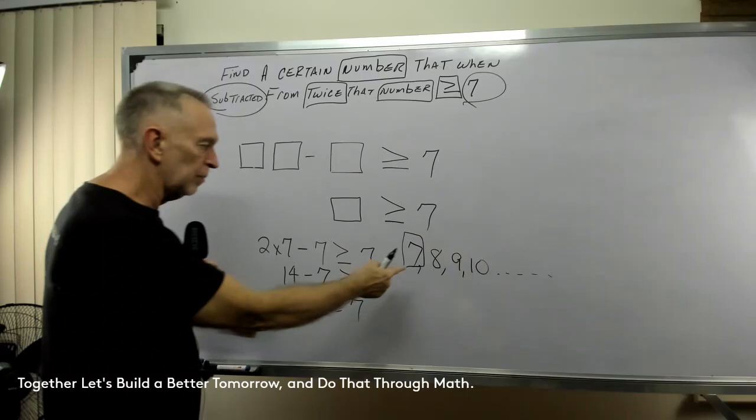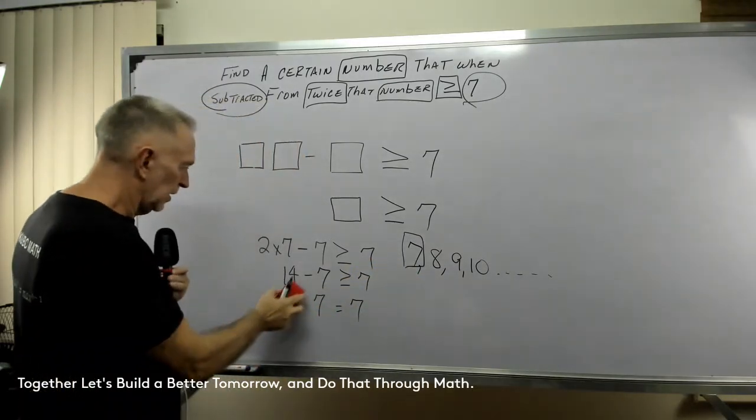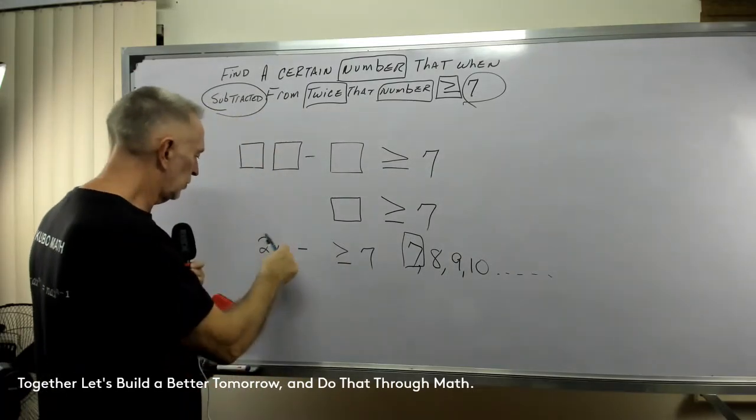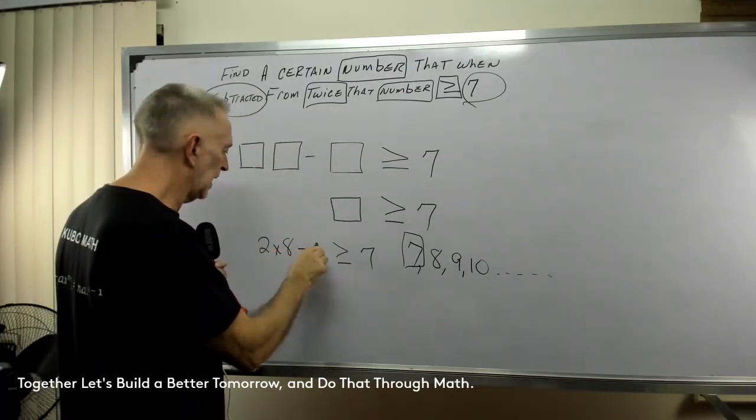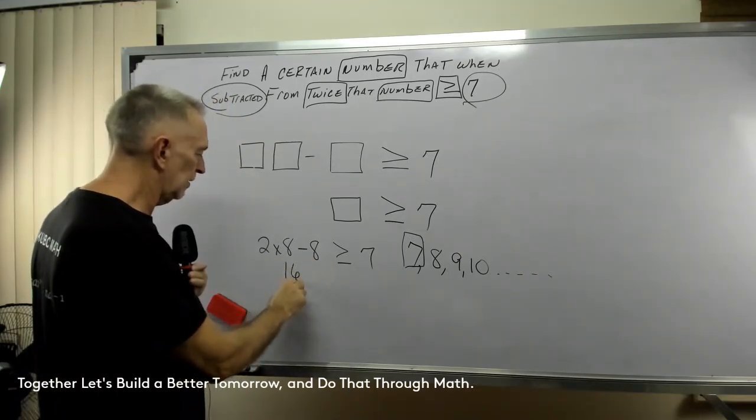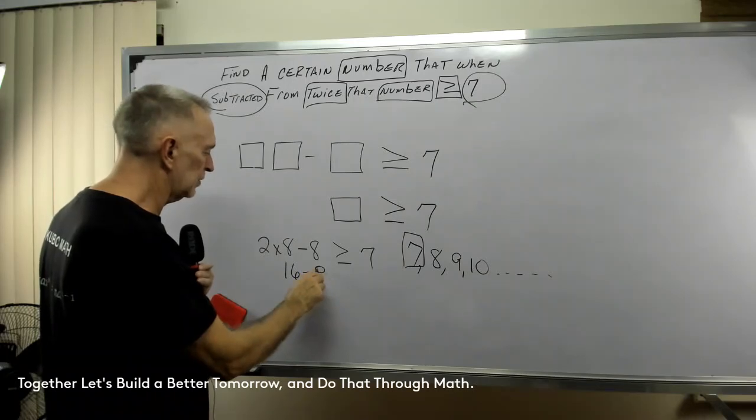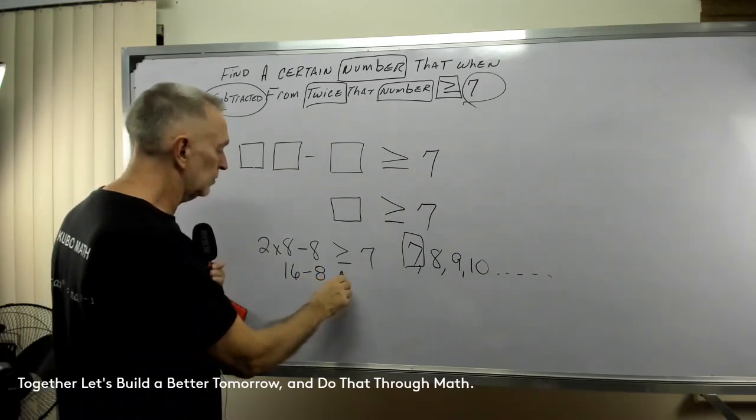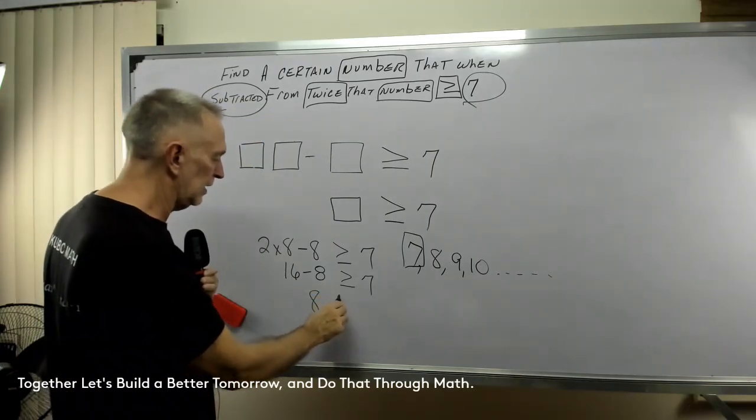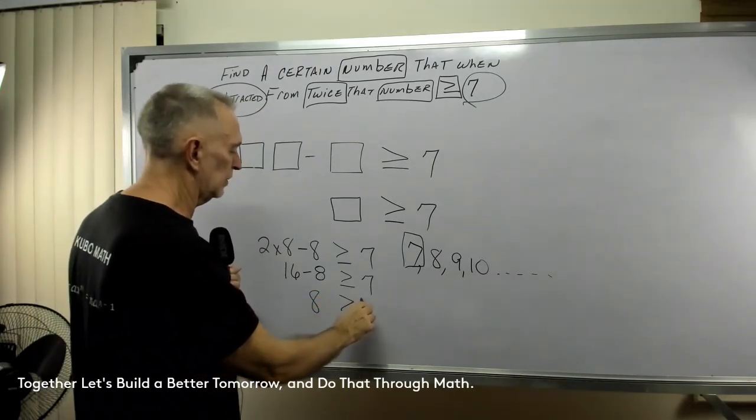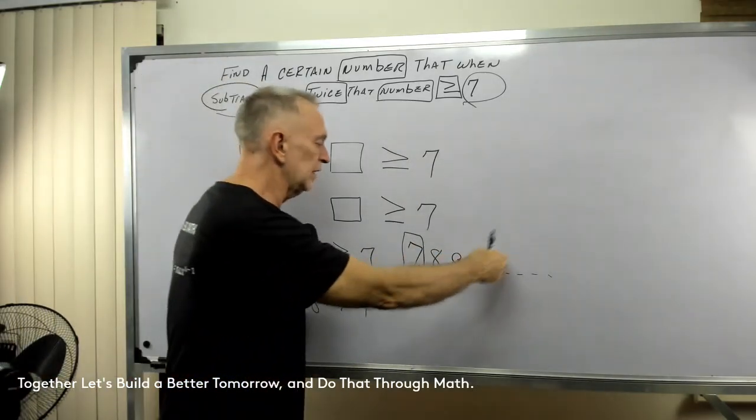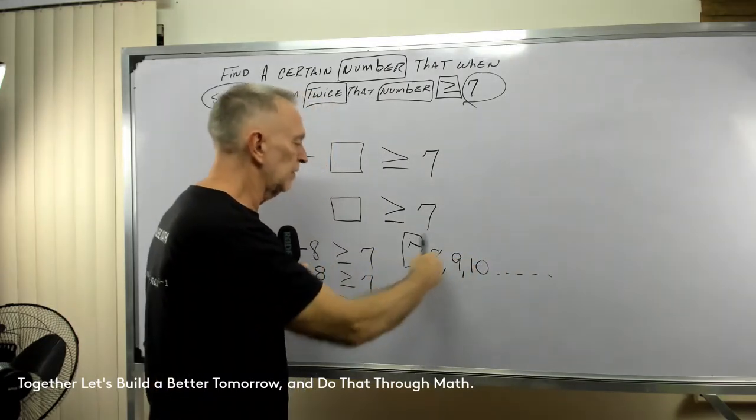Okay, what about 8? Let's plug in 8. So, 2 times 8 minus 8. So, 2 times 8 is what? 16. 16 minus 8 is... Is it greater or equal to 7? Well, 16 minus 8 is 8, and that is greater than 7. So, that works also. And for every one of these numbers, it works. 7 on up.